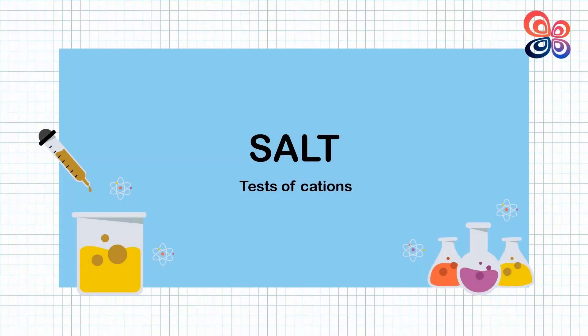As we know that ionic compounds consist of cation and anion. Qualitative analysis of salt is used to identify the ions present in the salt by analyzing its physical and chemical properties.